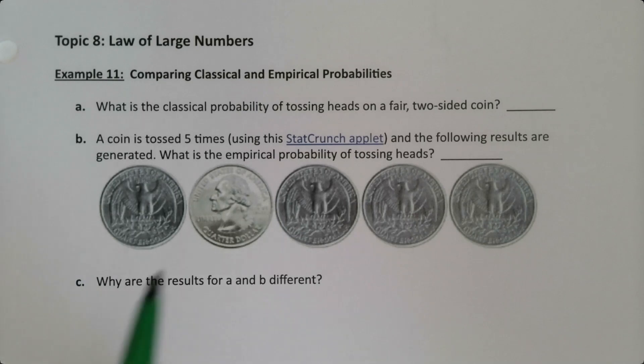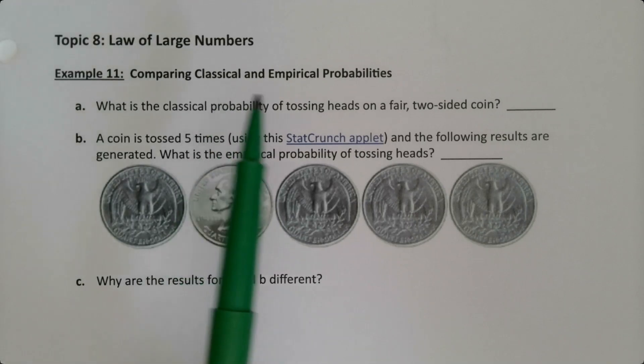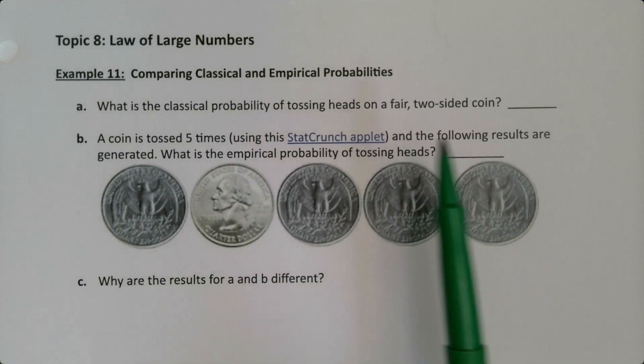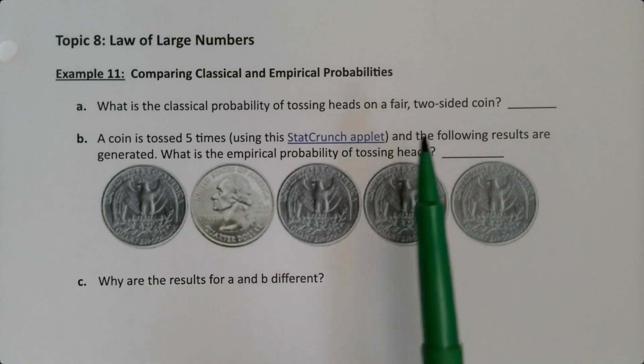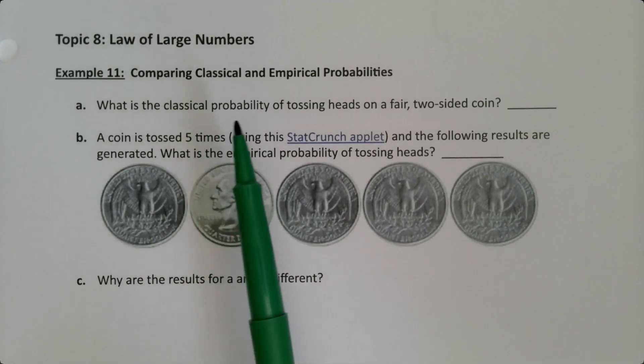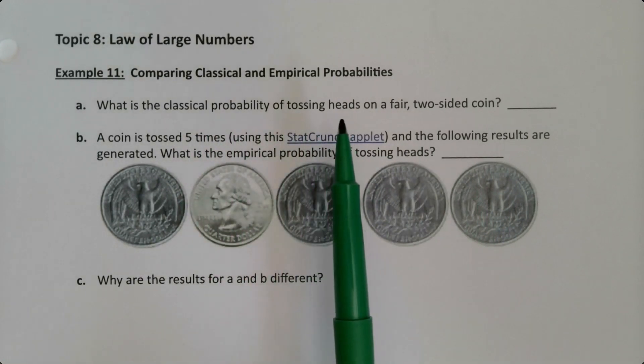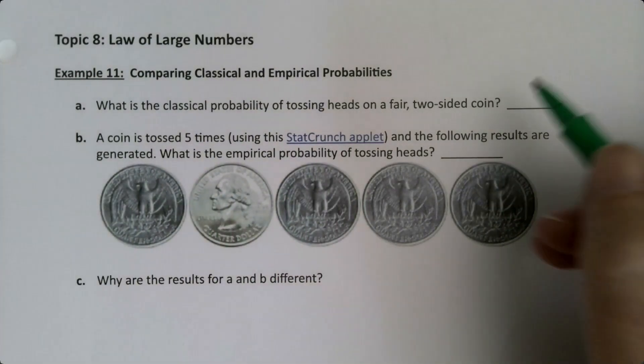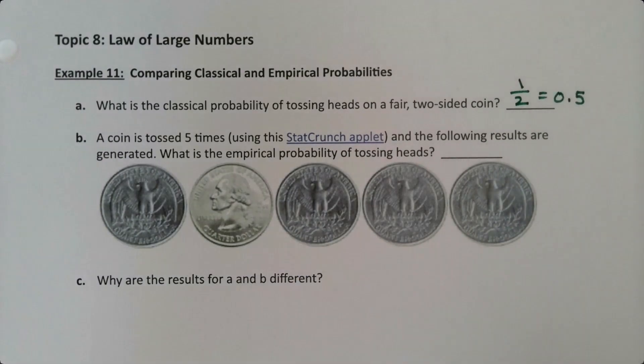For this last example, we want to expand upon the ideas of classical and empirical probabilities to reach something called the law of large numbers. So let's think about a coin, for example. When we have a fair two-sided coin, then we assume the classical probability of tossing heads would be one out of two, because there are two sides, one of them is heads and one of them is tails, which is 0.5 if we count it as a decimal.